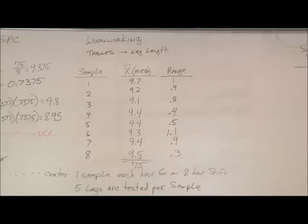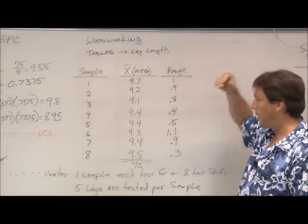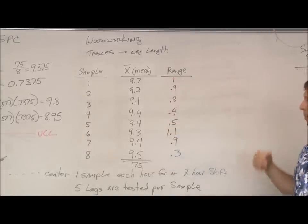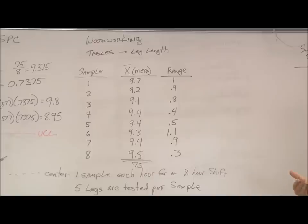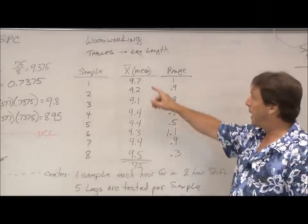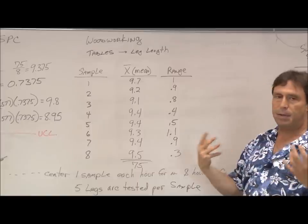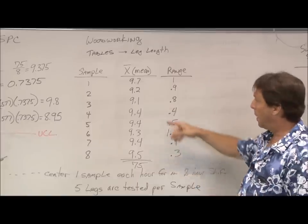Let's take a look at an example. Say we're woodworking and we're making tables and we have to measure the length of the legs that go on each table. So every hour we take a sample. We take a sample of five legs and measure them. We average those five together and we get the mean, which is also called X bar in statistics, but it's just the average.